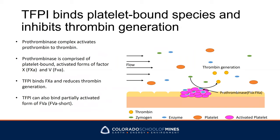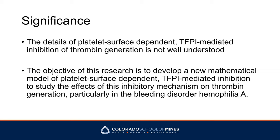A new study shows that TFPI can also bind a partially activated form of factor 5a, which we call factor 5a short, to influence coagulation. However, the details of platelet surface-dependent TFPI-mediated inhibition of thrombin generation are not well understood. Therefore, the objective of our study is to construct a new mathematical model with a new TFPI inhibitory mechanism and study how such inhibition affects thrombin generation and influences bleeding disorders, particularly hemophilia A.